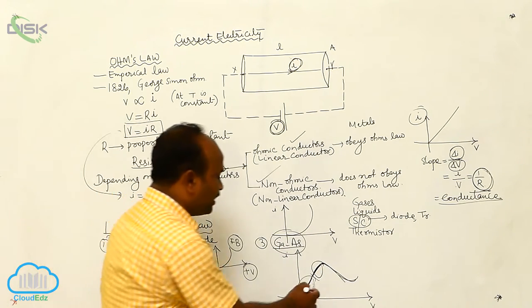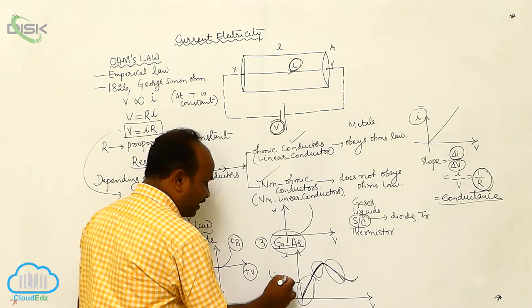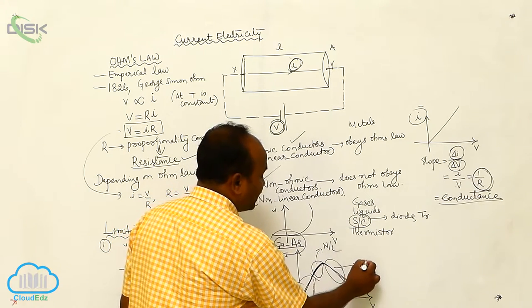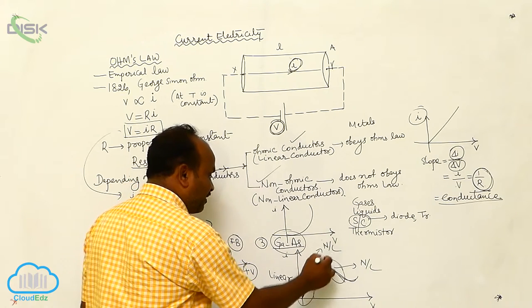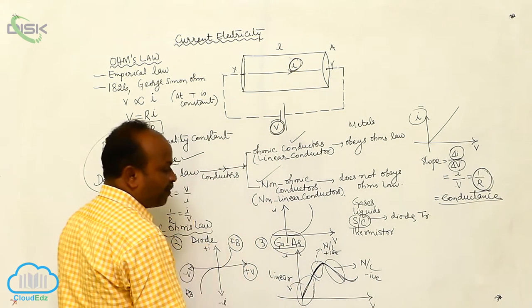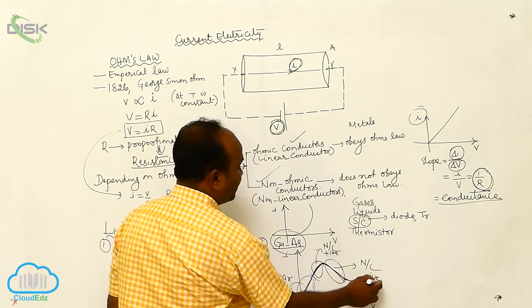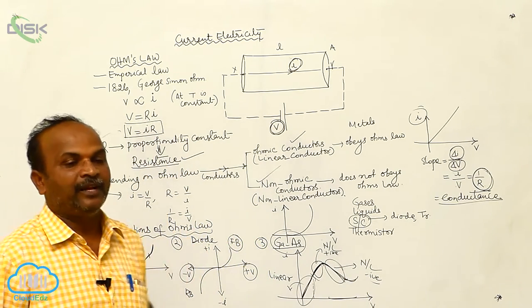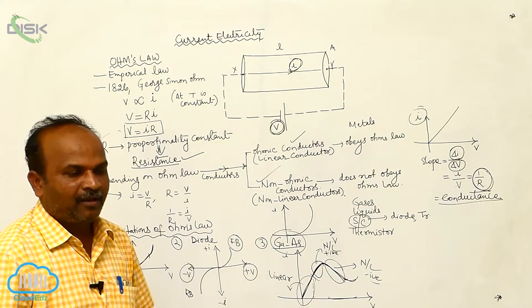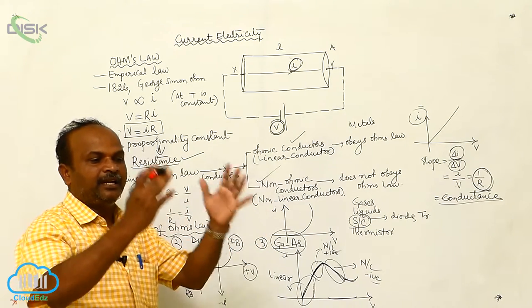This gives a non-linear relation. In one region, there is a linear relation between voltage and current. In the next region, the V-I graph is non-linear with a positive slope. In another region, it is non-linear with a negative slope — meaning as voltage increases, current decreases instead of increasing. Therefore, in all these cases, Ohm's law is not valid.